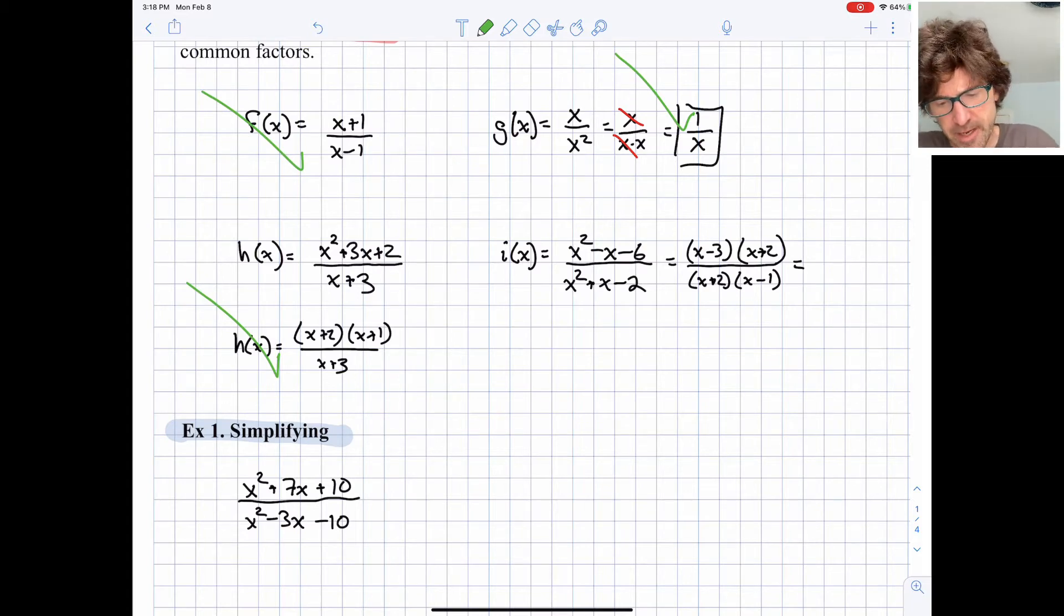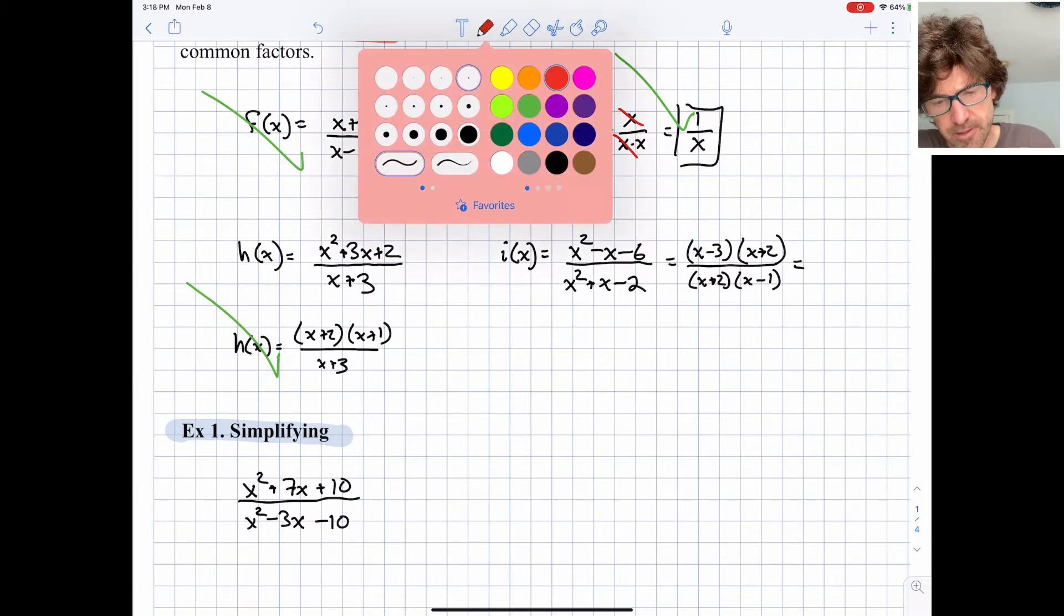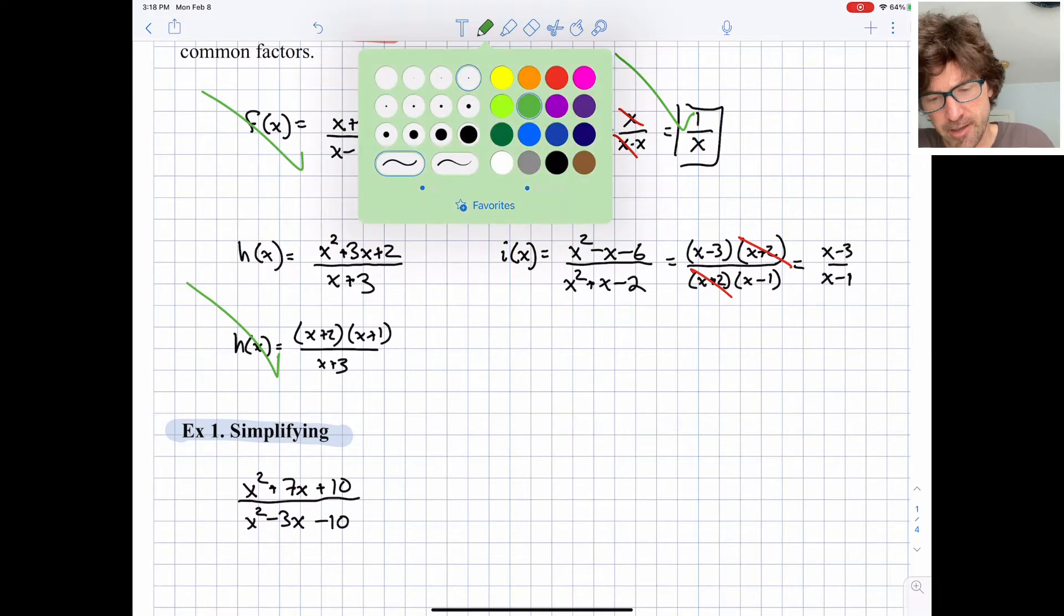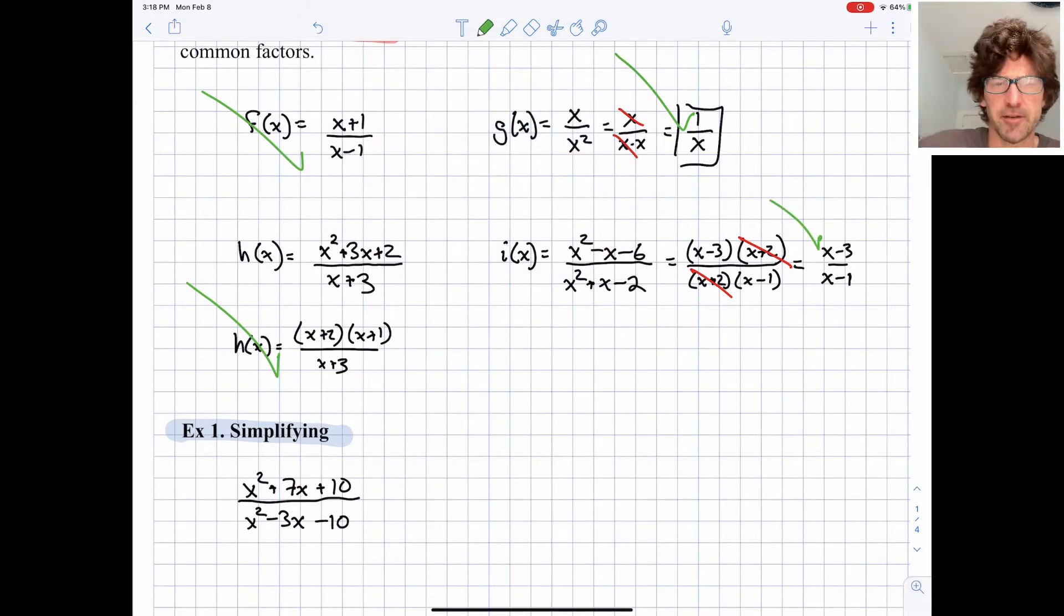But if we had to do some factoring, sometimes we are able to do some canceling. And for i(x) I think you can see that our simplest form would be x minus 3 over x minus 1, and then it's fully simplified right there.